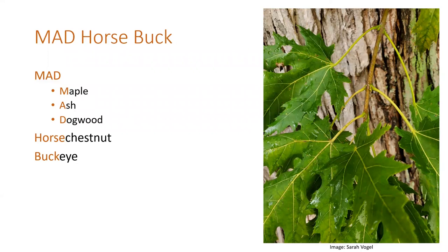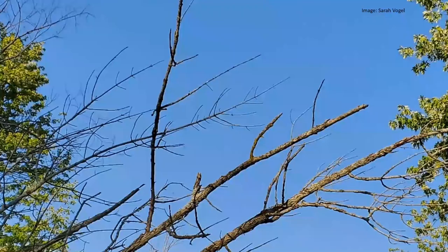Not only will the leafing pattern often be opposite, but sometimes when the leaves are not present, even the branching structure can be opposite. This is an Acer species — actually box elder, which is not a maple but still in the genus Acer. The branching structure on here is still very obviously opposite, so that can help in winter identification, which is a real challenge.